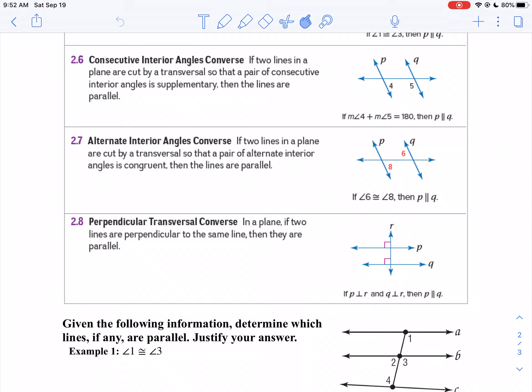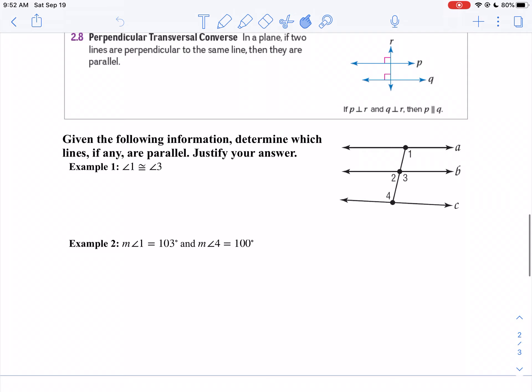If we take a look at example one here, I want to know which lines are parallel, given the information you're given, and if so, tell me why. So if we take a look at the first one, we're told angle 1 is congruent to angle 3.